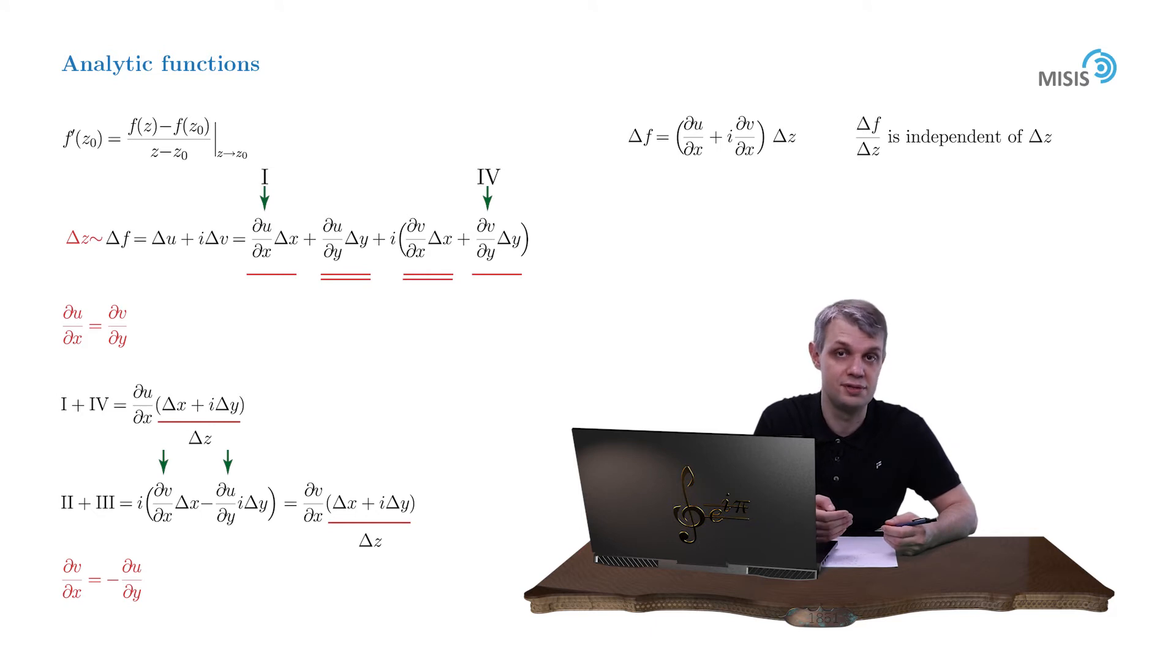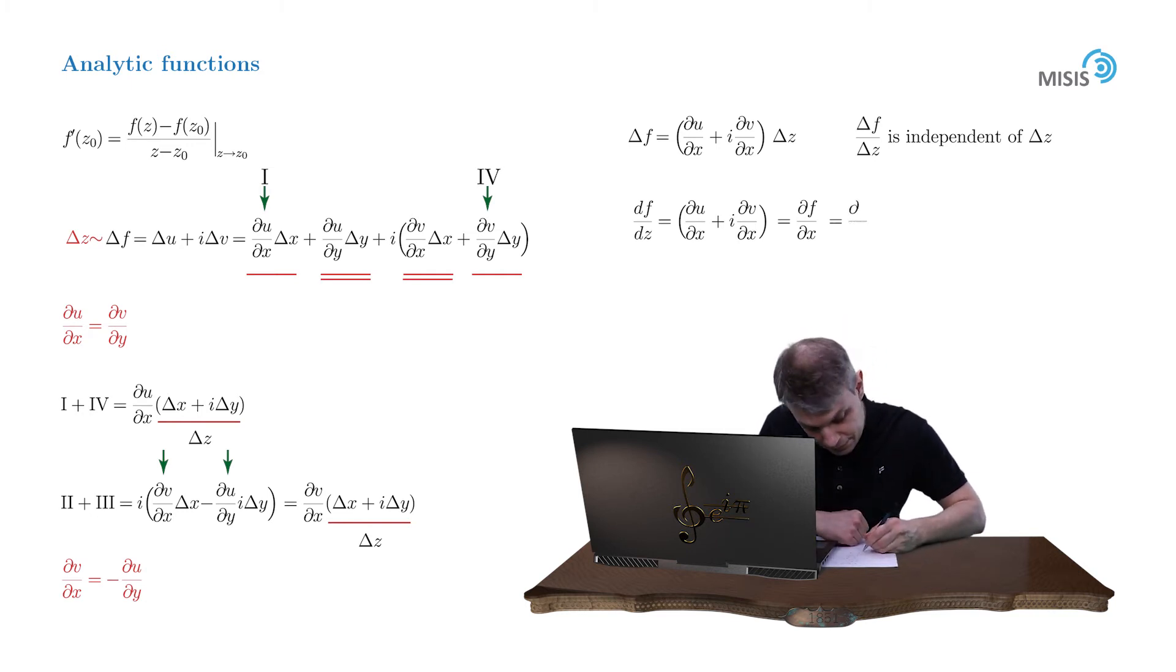We see that the complex derivative of function f is defined as du/dx plus i dv/dx. It is as if we just took the differential function df and differentiated it with respect to dx. Or we can use our conditions to rearrange this expression slightly: we can substitute du/dx with dv/dy, while dv/dx can be substituted with minus du/dy.